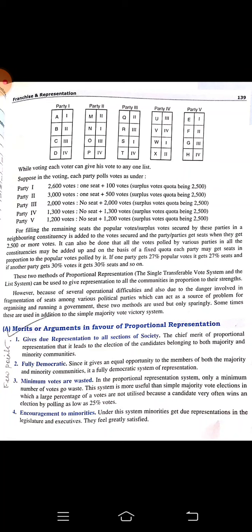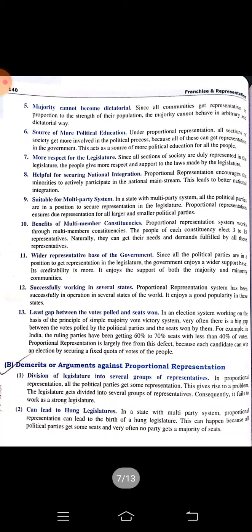There are several merits of proportional representation: it gives due representation to all sections of society, it is fully democratic, minimum votes are wasted, it encourages minorities, the majority cannot become a dictator, it is a source of public education, it brings more respect for the legislature, is helpful for securing national integrity, suitable for a multi-party system, and offers the benefit of multi-member constituencies. However, there are demerits too: it can lead to a huge legislature, weak government, problems in government formation, more party politics, and a very complex vote counting process.